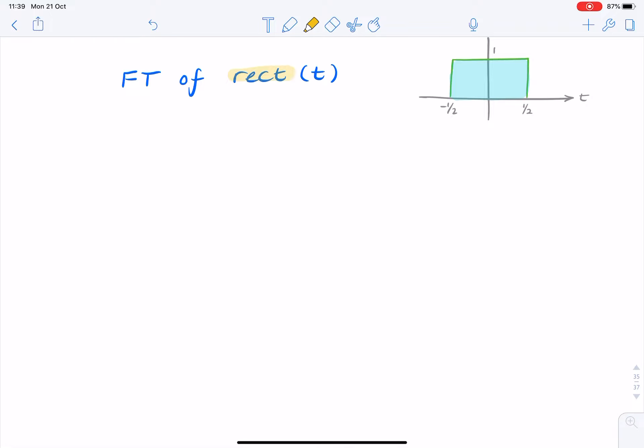This example is to find the Fourier transform of a rectangular pulse, so something like this.